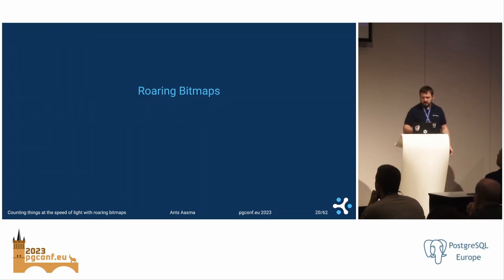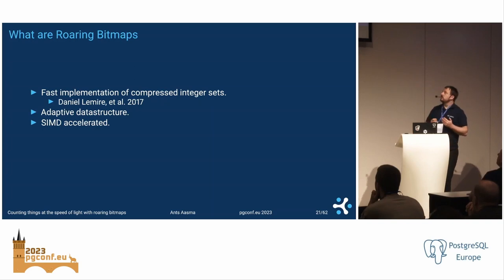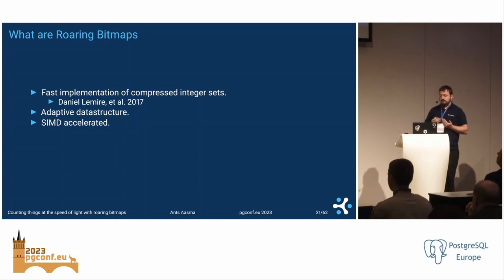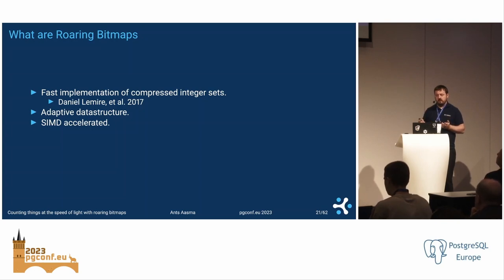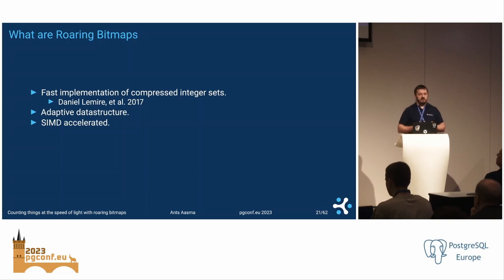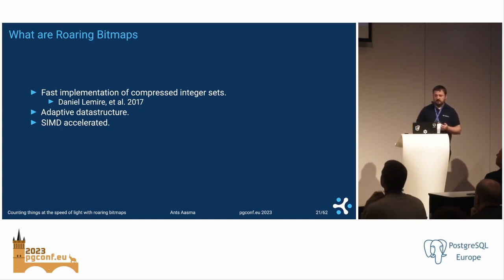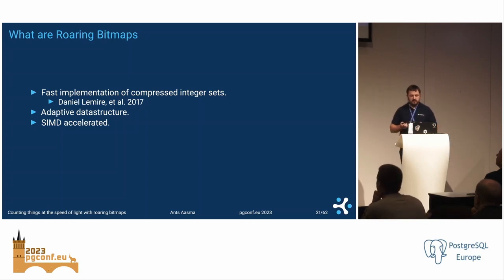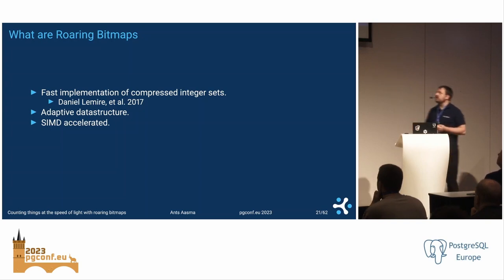That's where Roaring Bitmaps comes in. It's a fast implementation of compressed integer sets — a set of numbers stored in a compressed format. And 'fast implementation of X' means, if you know Daniel Lemire, that's basically what he does: fast implementation of anything using SIMD-accelerated code. It's a really nice data structure, and reasonably new as data structures go — 2017.